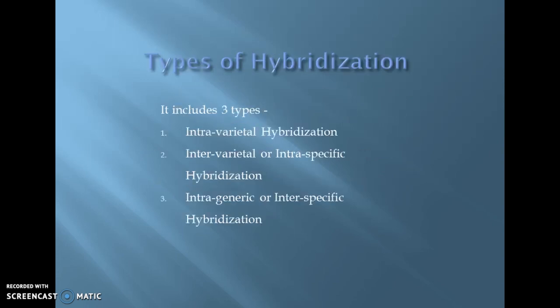Moving on to the next slide — what are the different types of hybridization? Broadly, hybridization can be classified into three main types. One is intra-varietal hybridization, which is the crossing between plants of the same variety. The next one is inter-varietal or intra-specific hybridization, which refers to the crossing of two different varieties.